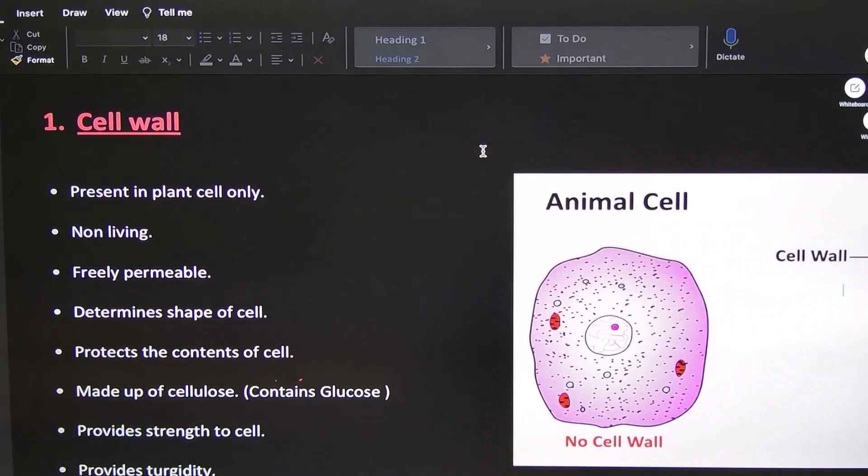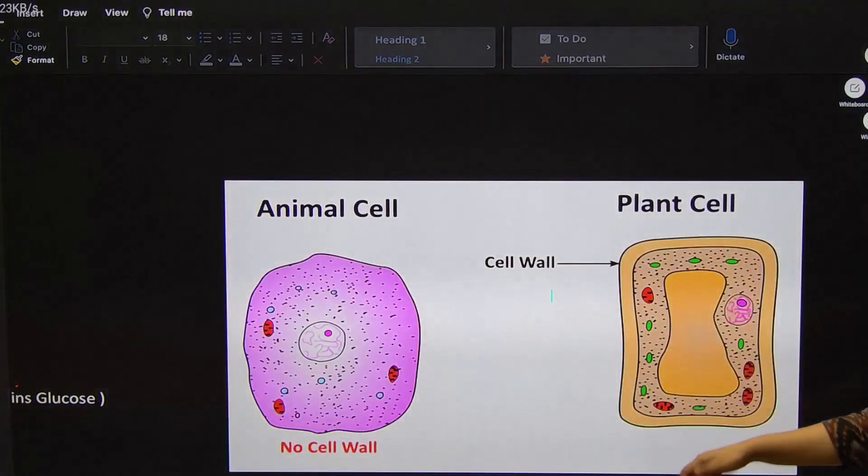You can see this diagram. Okay? There is no cell wall in animals. There is a cell wall in plants. I hope you have a topic clear. Thank you, guys.